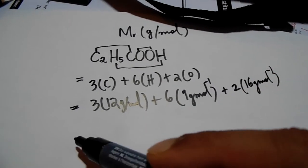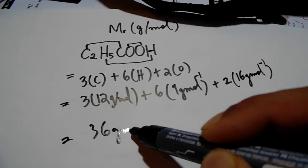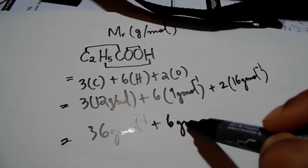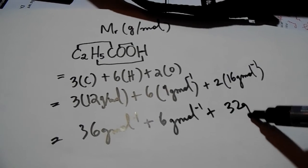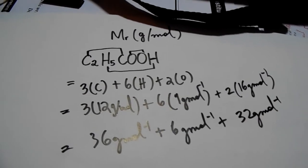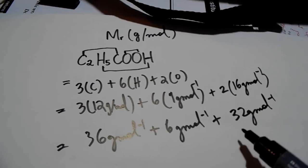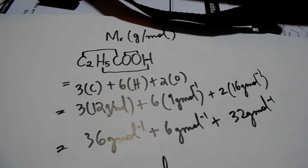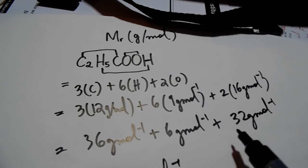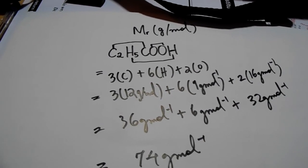and that will be 36 grams per mole plus 6 grams per mole plus 32 grams per mole. There we have it, voila! So that's 42... 44... 74 grams per mole. Thank you for watching, cheers!